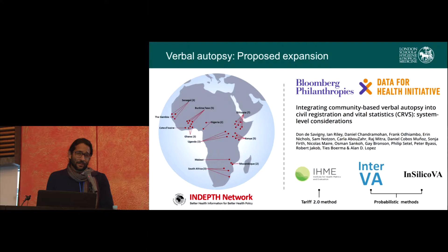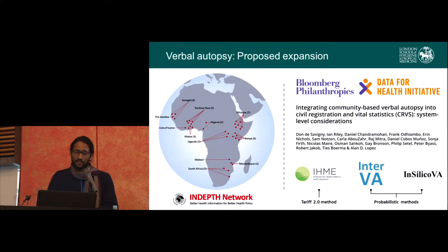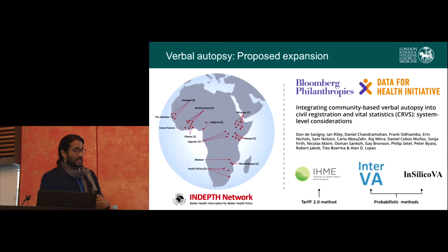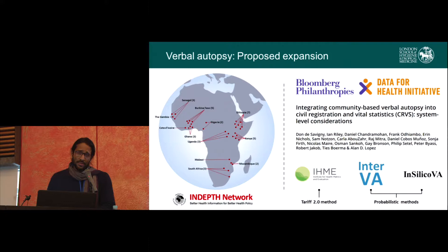VA is used primarily at health and demographic surveillance sites. The map on the left shows some of the sites from the INDEPTH network — a network of surveillance sites mostly across sub-Saharan Africa, but also a number in Asia. What happens routinely at these sites is that for every person who dies, a VA is done, data are interpreted, and they generate lists of cause-specific mortality. But most of these sites are in rural settings, so it's difficult to extrapolate to national scales. What's being proposed and implemented is the Data for Health Initiative, funded primarily by Bloomberg Philanthropies, which aims to integrate verbal autopsy into routine civil registration activities.